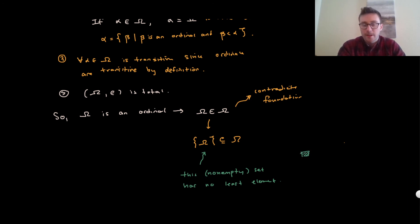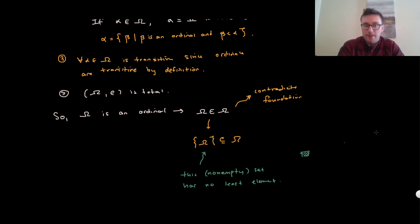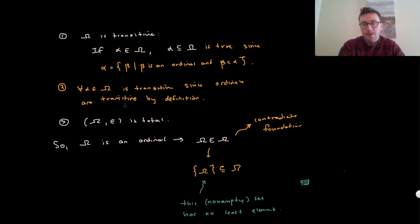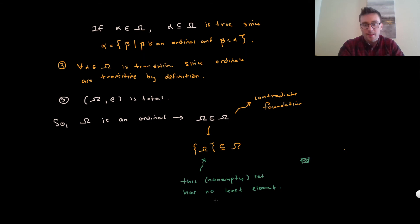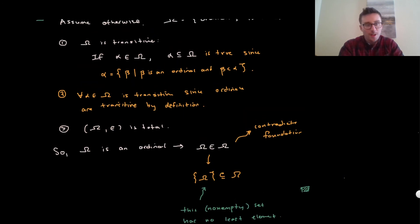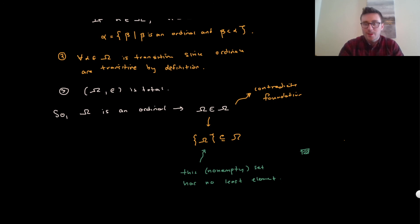We've reached a contradiction. A comment: sometimes set theorists work with axioms of ZFC without the axiom of foundation. You can still talk about ordinals without foundation — define an ordinal as a transitive set well-ordered by epsilon, prove the empty set is an ordinal, and so on. In that setting, you can still prove there can't be a set of all ordinals, but the contradiction appeals to the well-ordering argument rather than foundation. That's Burali-Forti. In the next video we'll start defining ordinal arithmetic and work toward talking about cardinals.